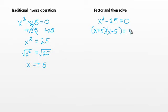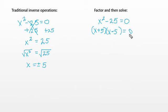When we multiply these two factors together, it must equal zero. That tells us that either the first factor equals zero, or the second factor equals zero, or both. One of them has to be zero in order to get a product of zero — we have to multiply something by zero to get zero. So we can set each factor equal to zero and solve for x.